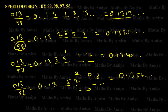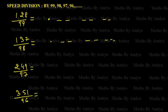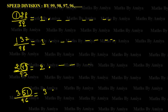Now, what happens when we have an extra digit in the numerator? The rule remains the same: point, double-digit, double-digit, double-digit. If we have an extra digit, we work on double digits. The extra digit is the integral value — for example, if the extra digit is 1, write 1; if it is 2, write 2; if it is 3, write 3 before the decimal.